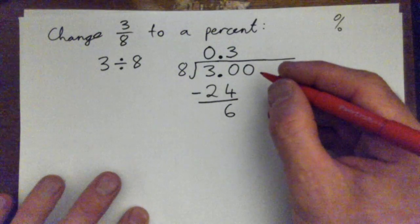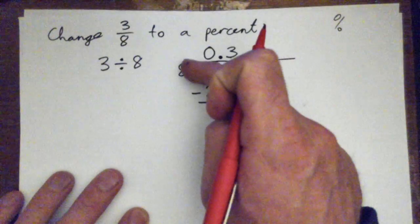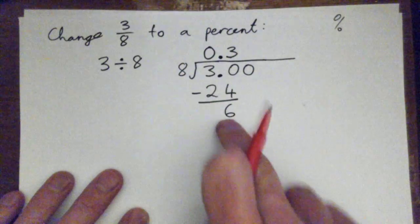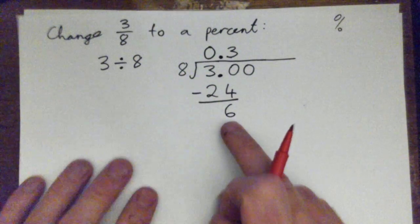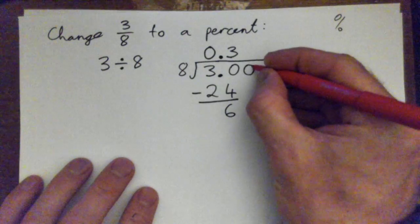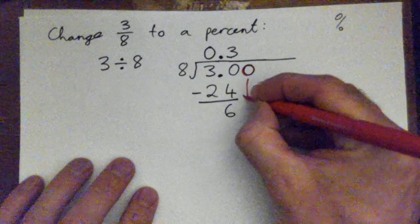And that's the remainder. Now, eight doesn't go into six, and that's great. It's not supposed to. So we take this zero, and we bring it down. And now we have sixty.